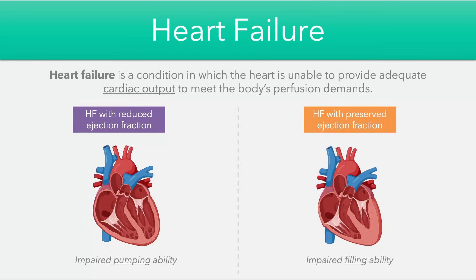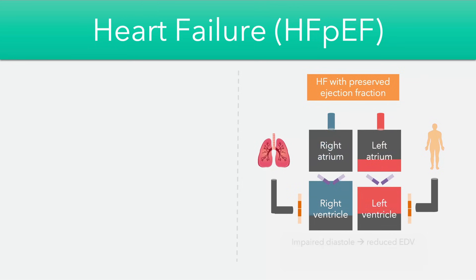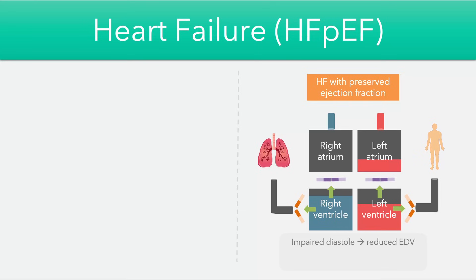The second type is heart failure with a preserved ejection fraction. Here, the diastolic phase of the cardiac cycle is impaired, and we end up with less blood in the ventricles at the end of diastole — a reduced end diastolic volume. In comparison, the process of ventricular systole, the contraction phase, actually occurs as normal, so blood is ejected into the corresponding arteries from the ventricles.